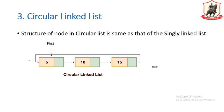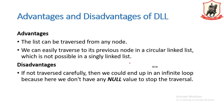We can traverse this list in a circular manner — when we reach the last node, we can go back to the first node and start traversing again. The advantages of the circular linked list are that the list can be traversed from any node as it has no null pointer, and we can easily traverse to the previous node. The disadvantage is that if not traversed carefully, we could end up in an infinite loop, because there is no null value to stop the traversal.